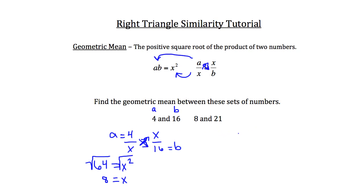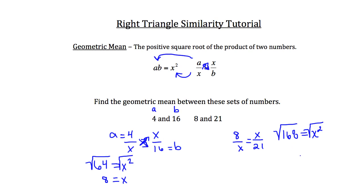Now let's take a look at 8 and 21. Again we'll put 8 in for a, write that over x, and set that equal to x over b, which in this case is 21. Now 8 times 21 is 168, and we want to set that equal to x squared. Again we'll take the square root of both sides of the equation to get x alone. In this case 168 doesn't factor out nicely, so we're going to use prime factorization.